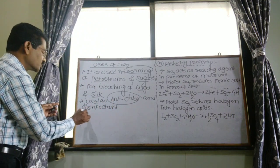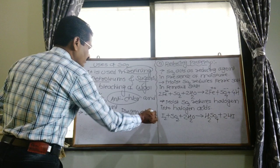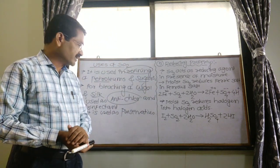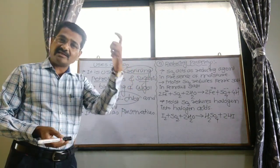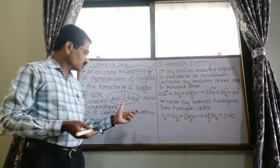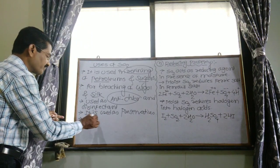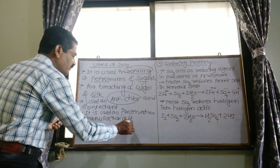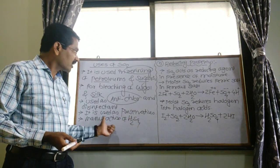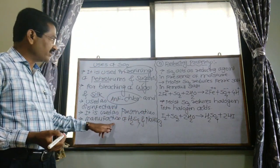Sulfur dioxide is used as a preservative in biological laboratories. Biological specimens can be preserved in sulfur dioxide, which increases the life of those specimens. Sulfur dioxide is also used in the manufacture of sulfuric acid, which is the king of chemicals, as well as sodium bisulfate. Both compounds can be manufactured using sulfur dioxide.